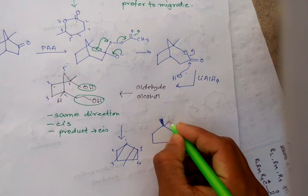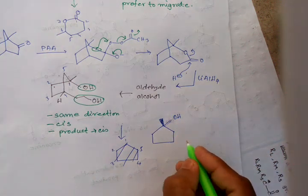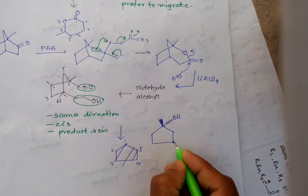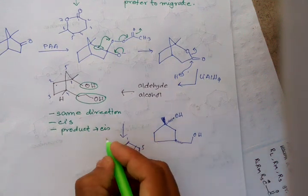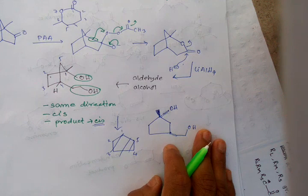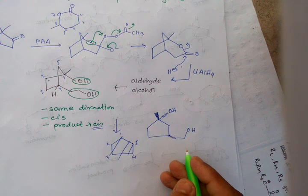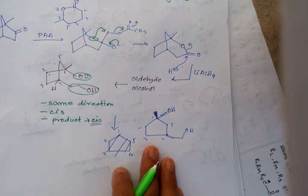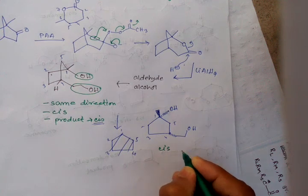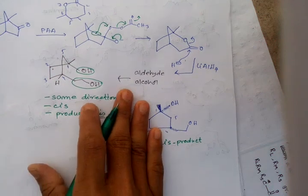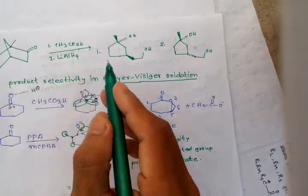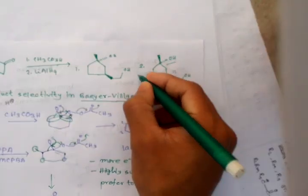This methyl group is above the plane because this group is below the plane, and this CH2CH2OH group is also below the plane, because to form this product — numbering one, two, three, four, five — this is the cis product. So the correct answer: this bicyclic ketone treated with peracetic acid followed by lithium aluminum hydride gives the cis product. Thank you.